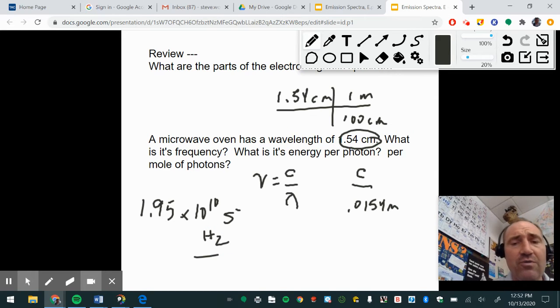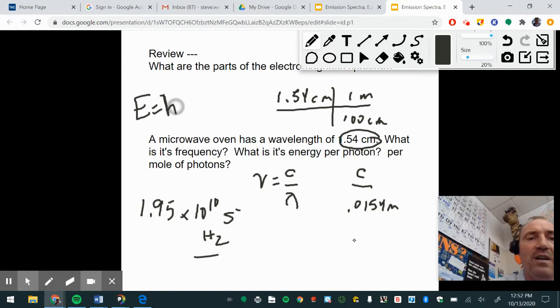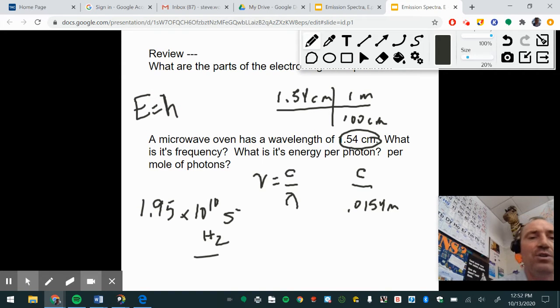Now, the next thing they're going to try to do is they're going to ask you to do the energy per photon. So you're going to need to know this formula, where energy per photon is equal to H times the frequency. So what is H? H, and you want to store this in your calculator, is 6.626 times 10 to the negative 34th joule seconds.